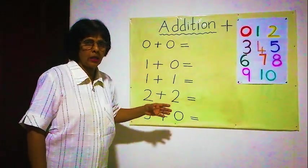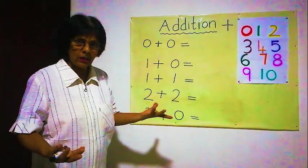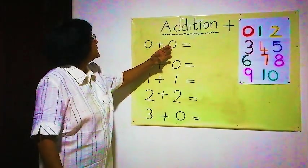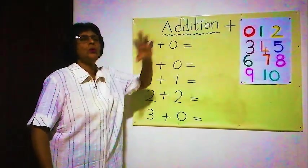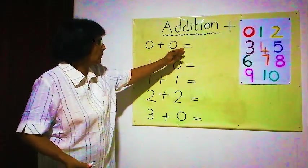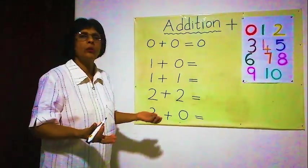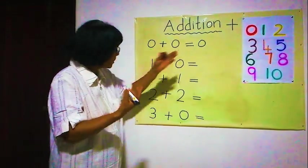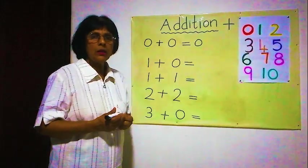Earlier we learned with pictures, now we are doing with numbers. Zero means nothing, so there's nothing I can draw here. Zero here also — can't draw anything. So the answer is also zero. Zero and zero makes zero. Can't draw anything because there's nothing, no value. Zero means no value, the answer is also no value — that's nothing. So the answer is zero.